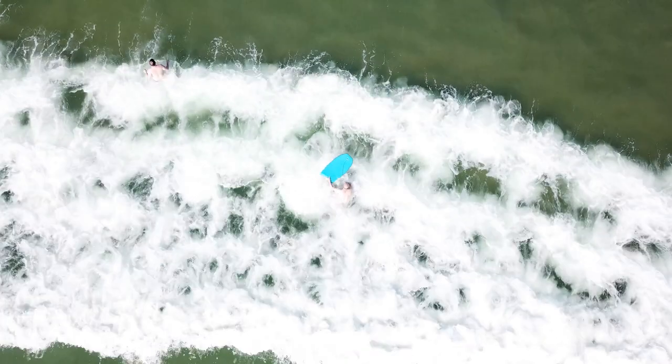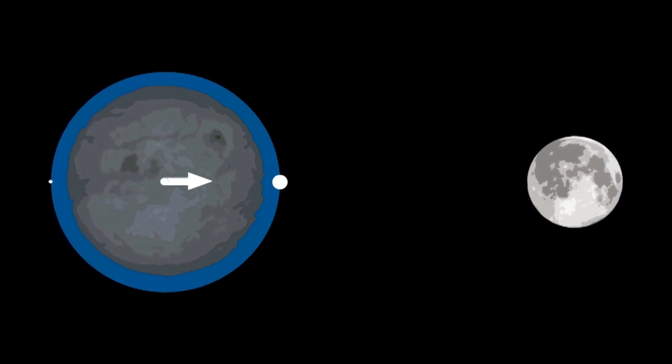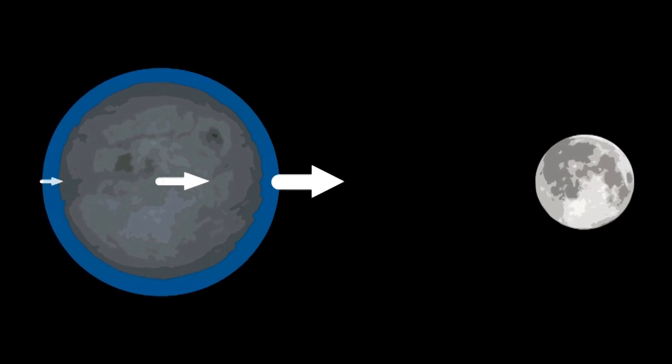It's because of tides. The moon's gravity pulls on the earth, but one side of the earth is closer to the moon. So the moon pulls on that side harder and pulls less on the opposite side.